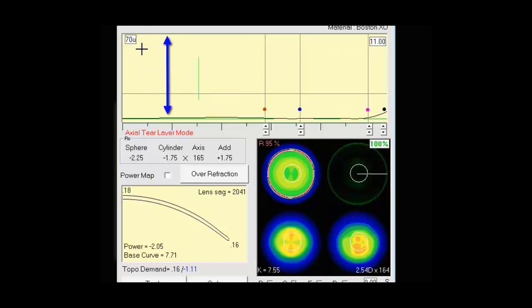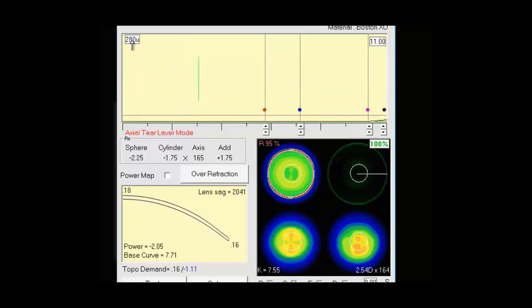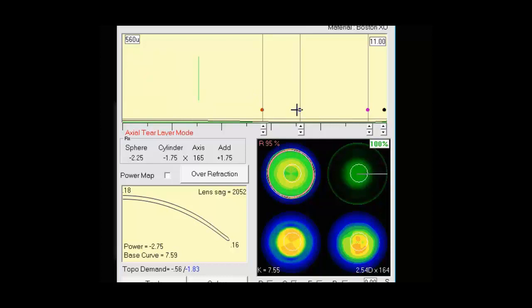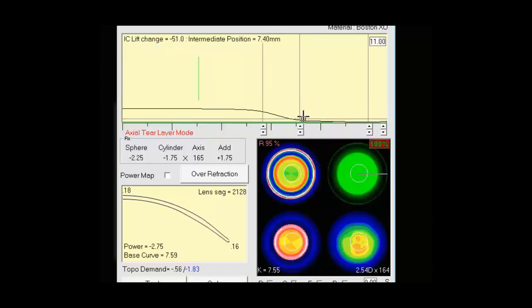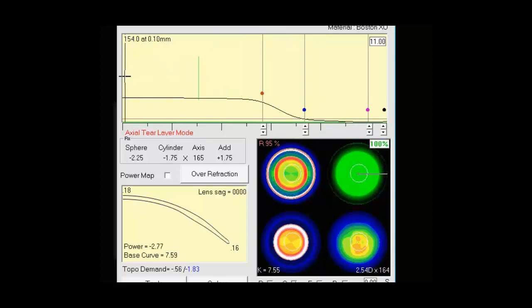If you're doing large diameter lenses and you're aiming to have more clearance, we can toggle this so we can make bigger changes and immediately have more clearance. So this is showing now 154 microns of central clearance. And as you see, if we switch back to a regular 70 micron view, everything would be off the screen.